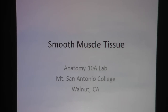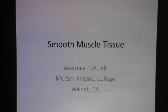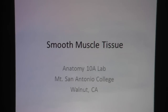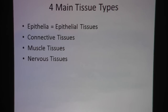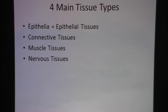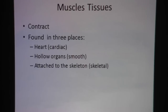Smooth muscle tissue. This video is made for the Anatomy 10A lab at Mount San Antonio College. We have four main tissue types in the body: epithelial tissue, connective tissues, muscle tissues, and nervous tissue. Because we're looking specifically at smooth muscle, let's talk about muscle tissues.